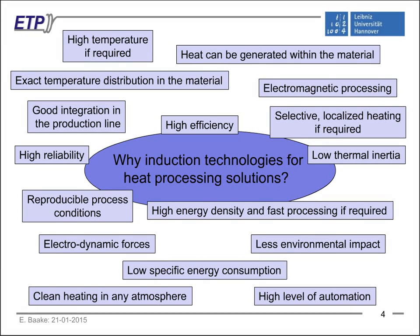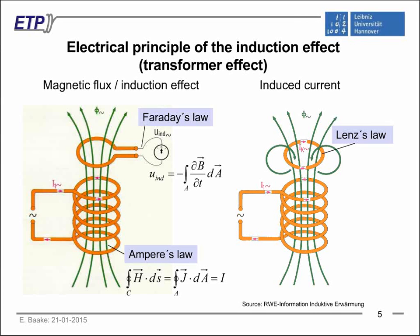The basics of induction heating is the electrical principle of the induction effect itself, well known from the electrical transformer, electrical engine, or generator. In principle, it is based on two laws — the so-called Maxwell equations. The first is that an electric current always generates an electromagnetic field, the so-called Ampere's law. The electromagnetic field can be created by a DC current, but also by AC current, in which case we have an oscillating magnetic field.